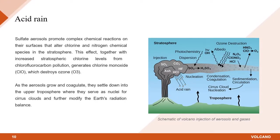Erupting volcanoes can cause acid rain. Sulfate aerosols promote complex chemical reactions on their surfaces that alter chlorine and nitrogen chemical species in the stratosphere. This effect, together with increased stratospheric chlorine levels from chloro-fluorocarbon pollution, generates chlorine monoxide, which destroys ozone.